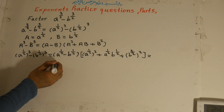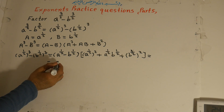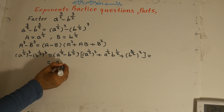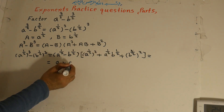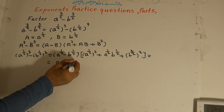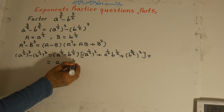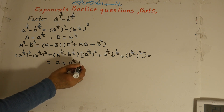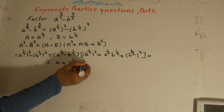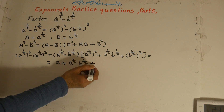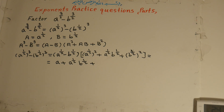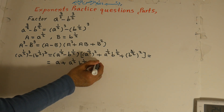Simplifying: 1 over 2 times 2 is 2 over 2, which equals 1, so a to the power of 1 is just a. The middle term is a to the power of 1 over 2 times b to the power of 1 over 2. And b to the power of 1 over 2 times 2 gives b to the power of 2 over 2, which equals b.